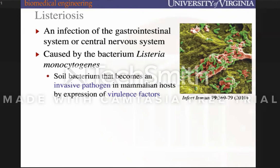What's really interesting is that listeriosis hijacks our cytoskeleton to permit its invasiveness. It's caused by the bacterium Listeria monocytogenes, typically just referred to as listeria. Its ability to become invasive is mediated by a virulence factor. Virulence factors are small molecules — they can be proteins, but not always — that aid in the aggressive behavior and invasiveness of that pathogen.